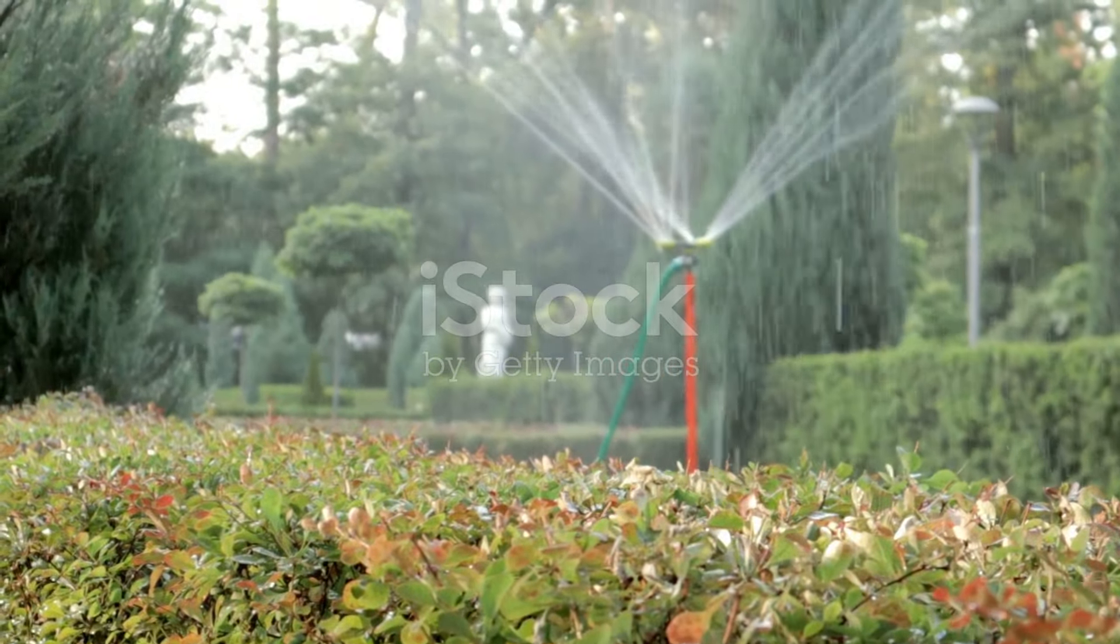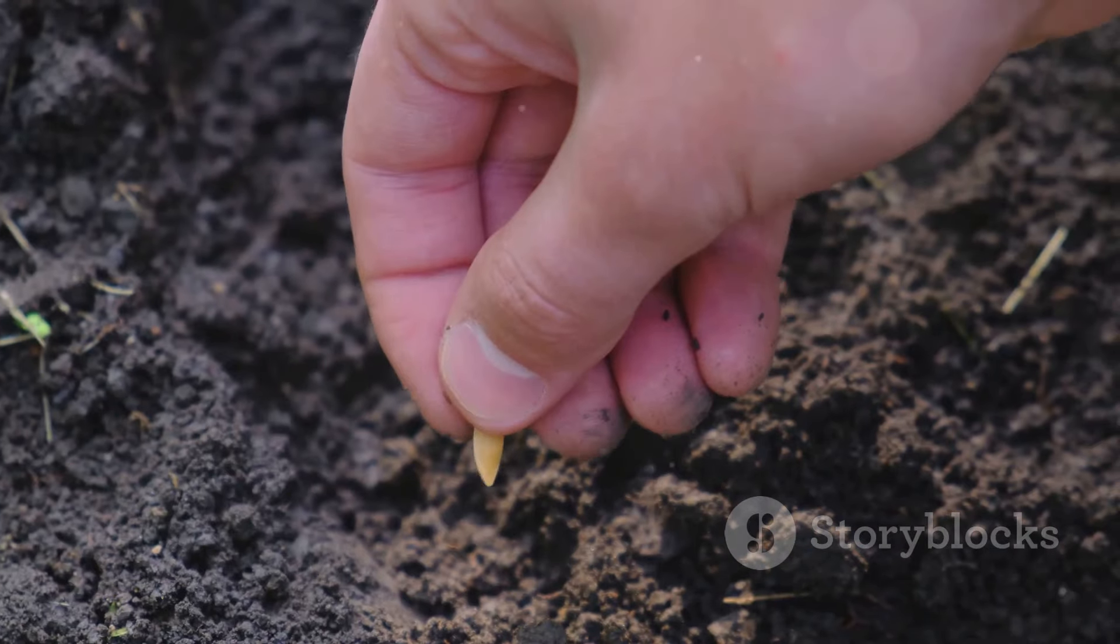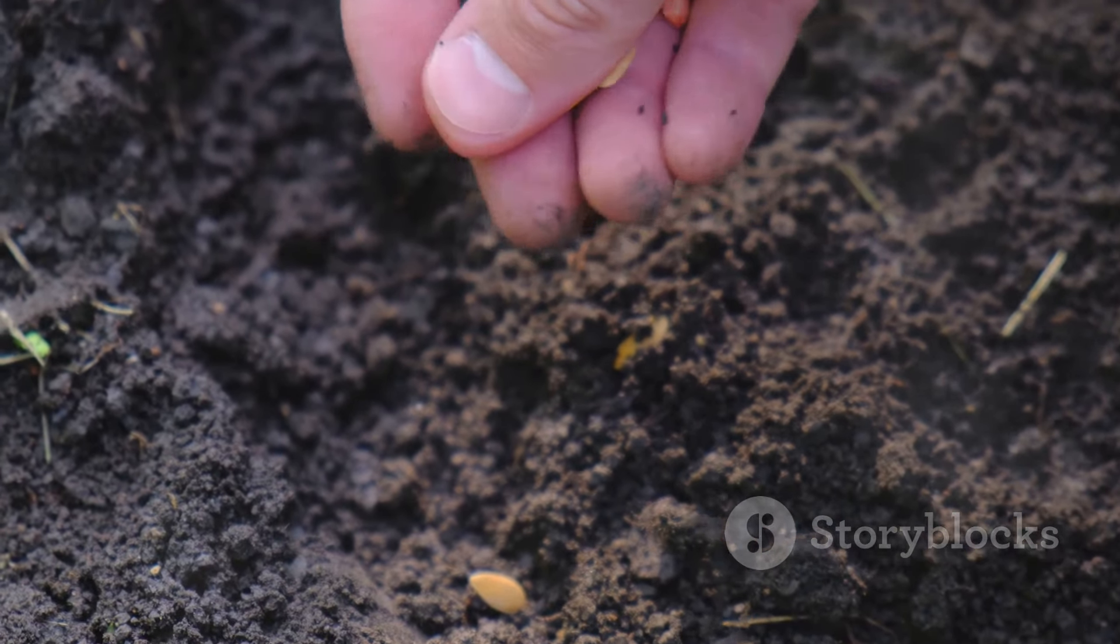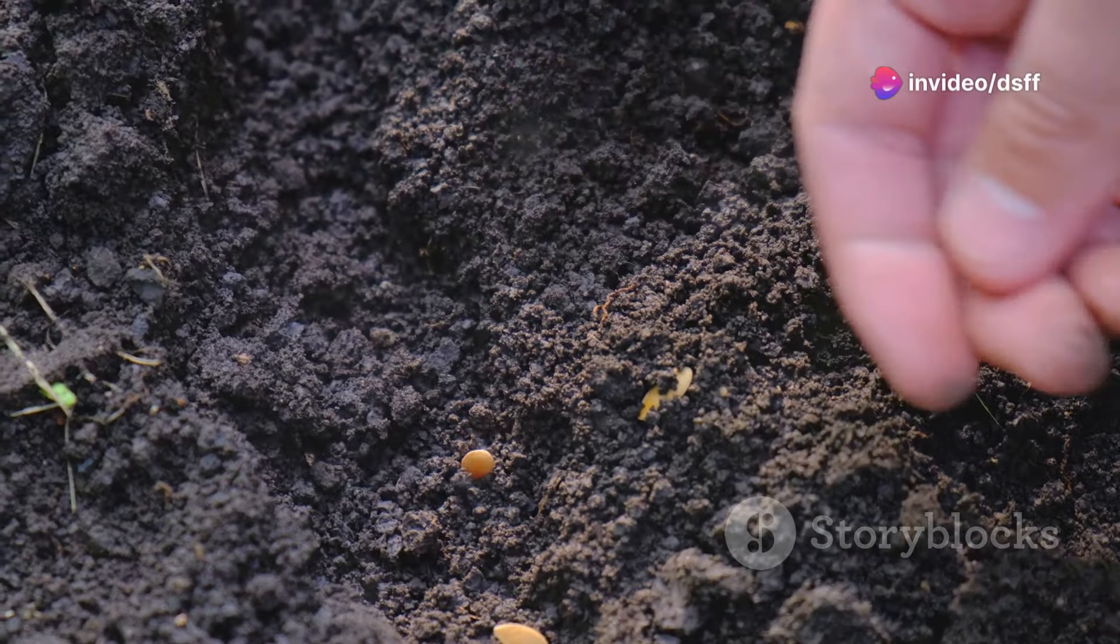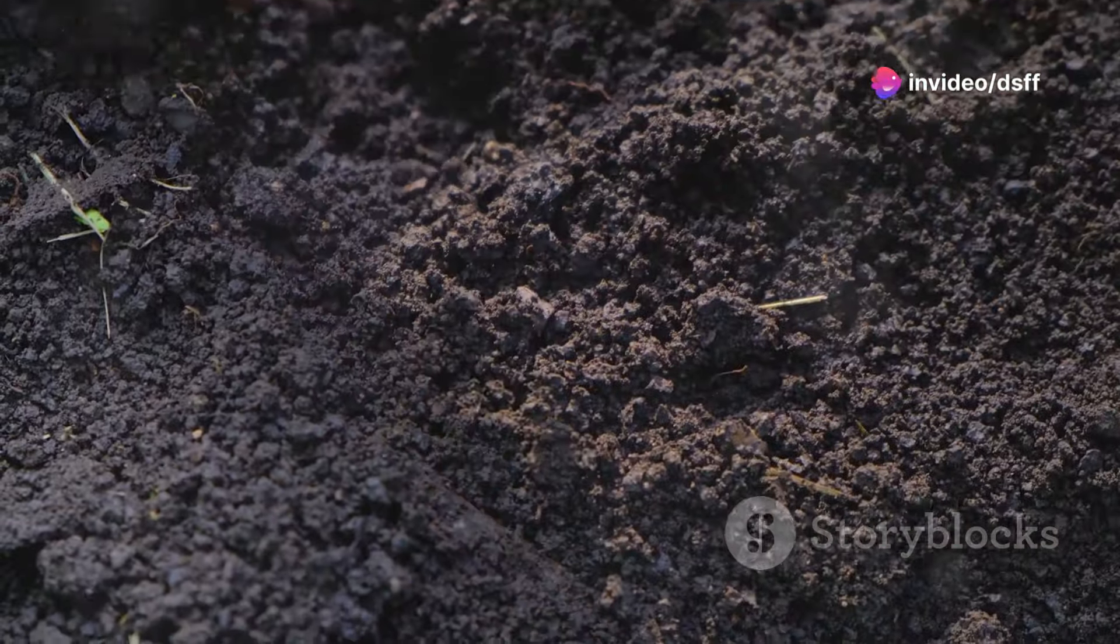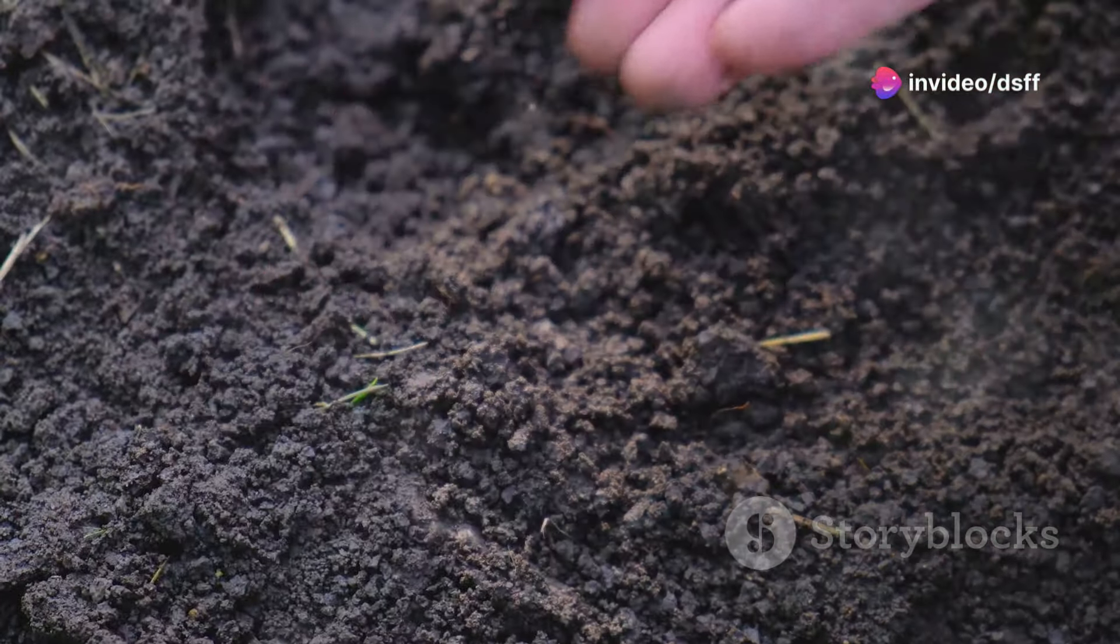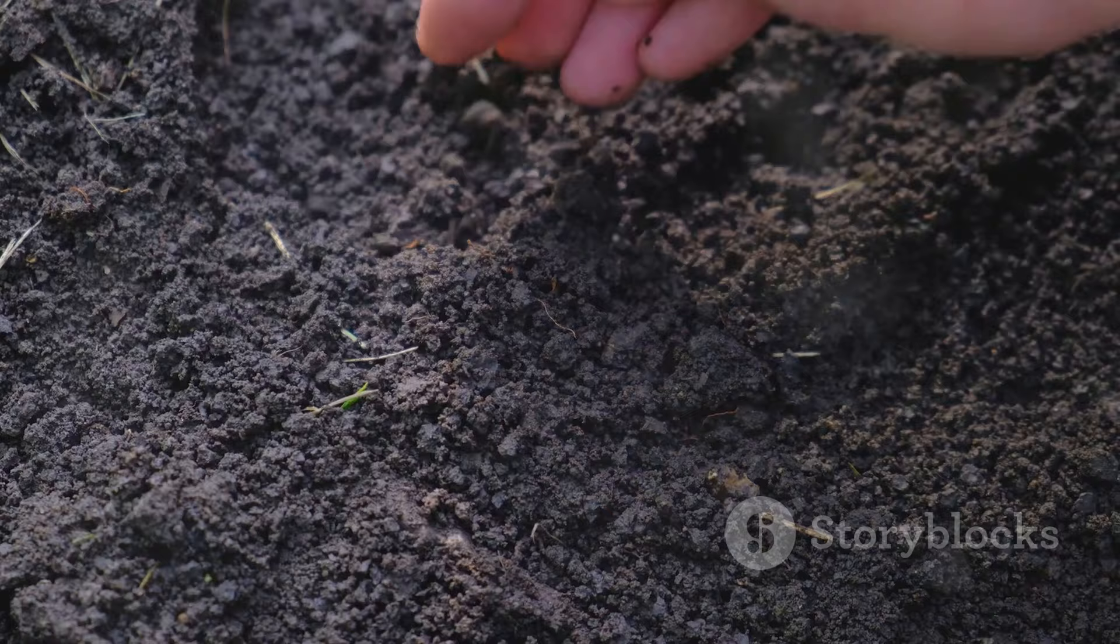And finally, mistake number seven is not using mulch. Mulch helps retain soil moisture, reduce evaporation, and prevent weeds. Apply a layer of mulch around your plants to keep the soil consistently moist and reduce the frequency of watering.